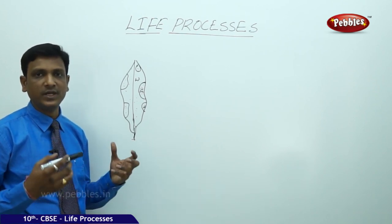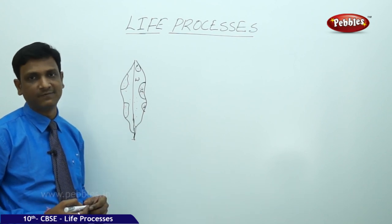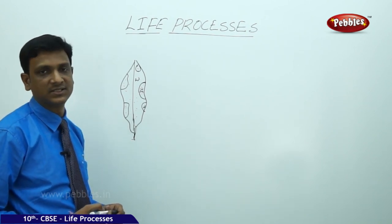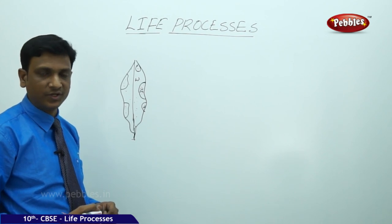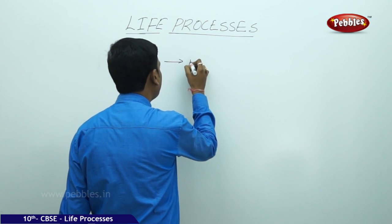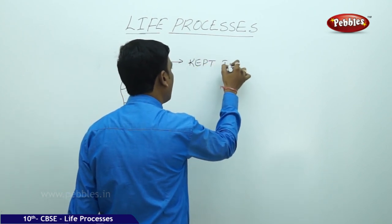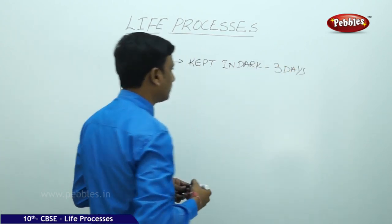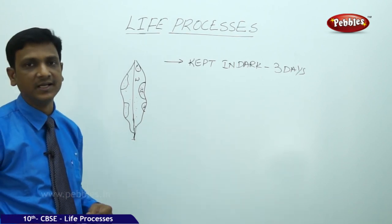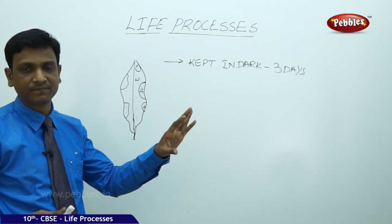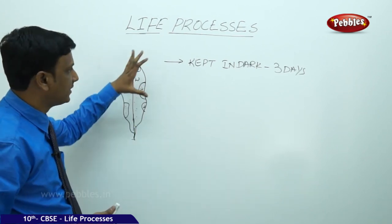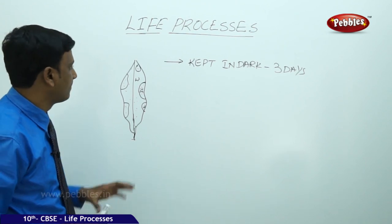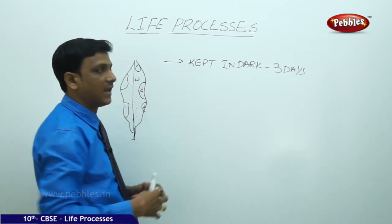To prove that chlorophyll is necessary for photosynthesis, we need a plant with variegated leaves — a potted plant such as crotons. First, this potted plant must be destarched by keeping it in the dark for three days. This is because when the plant is in sunlight it prepares starch, and we do not want any starch in the leaves initially. After three days of darkness, we take the plant and keep it in sunlight for six hours.